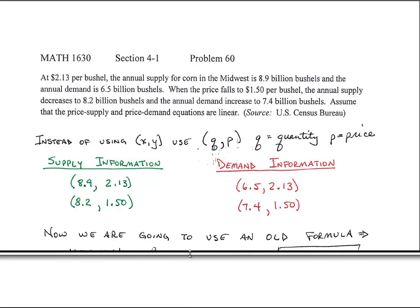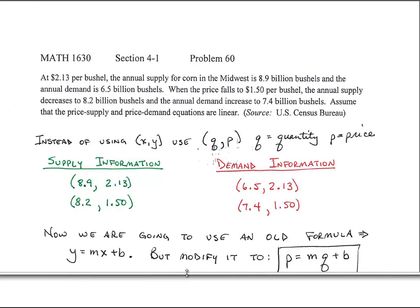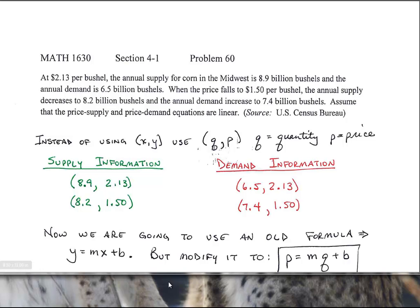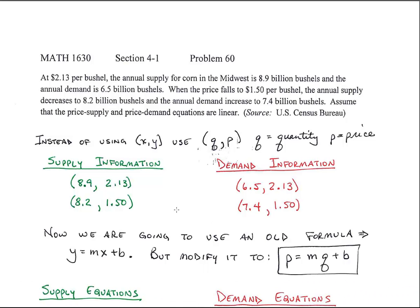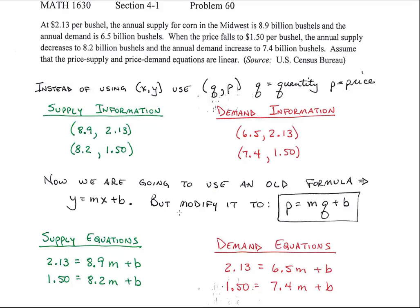Now we're going to use an old formula: Y equals MX plus B, but modify it to P equals MQ plus B, because remember I'm not using Y and X. Alright, so my supply equations, check this out. Here's my price and there's my Q, and I'm writing it with respect to a linear equation because that's what they told me to.